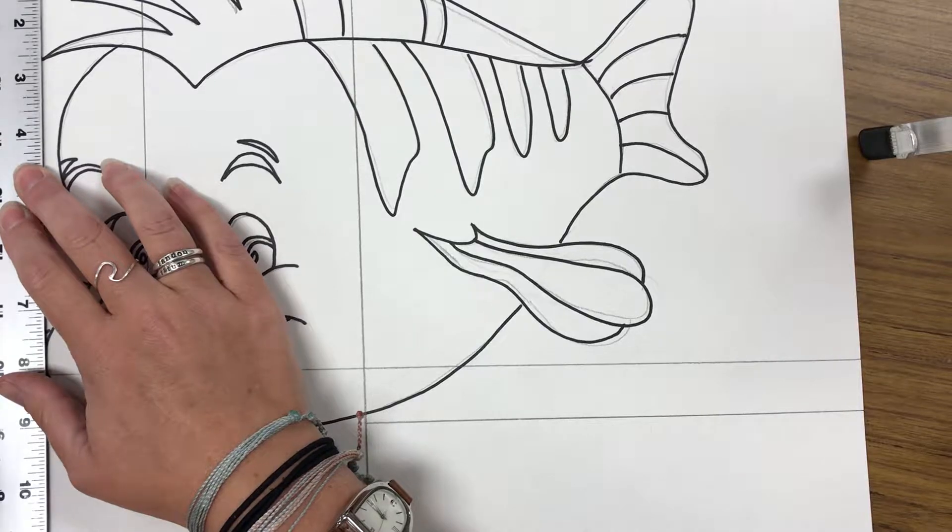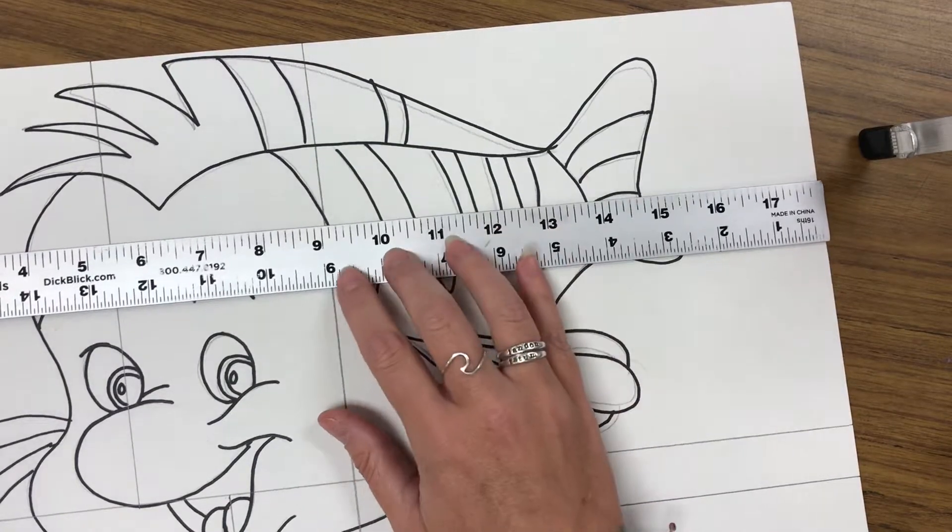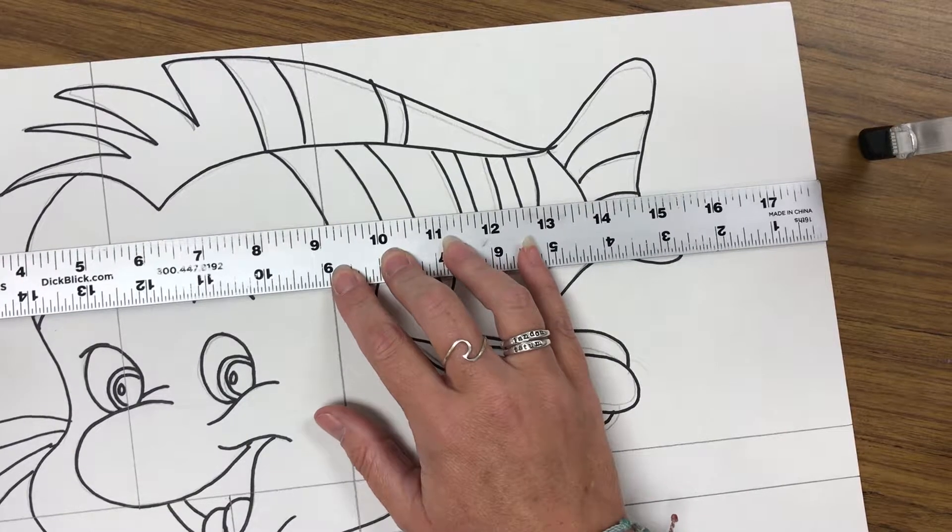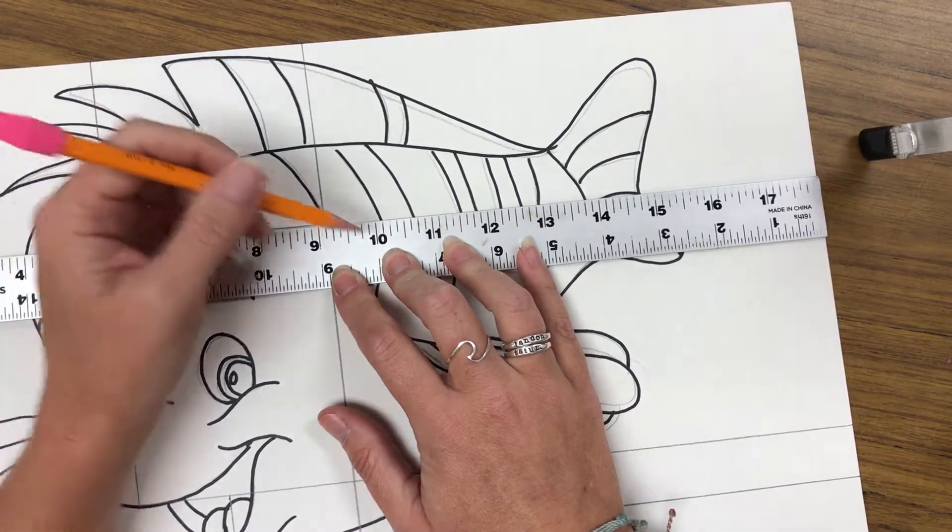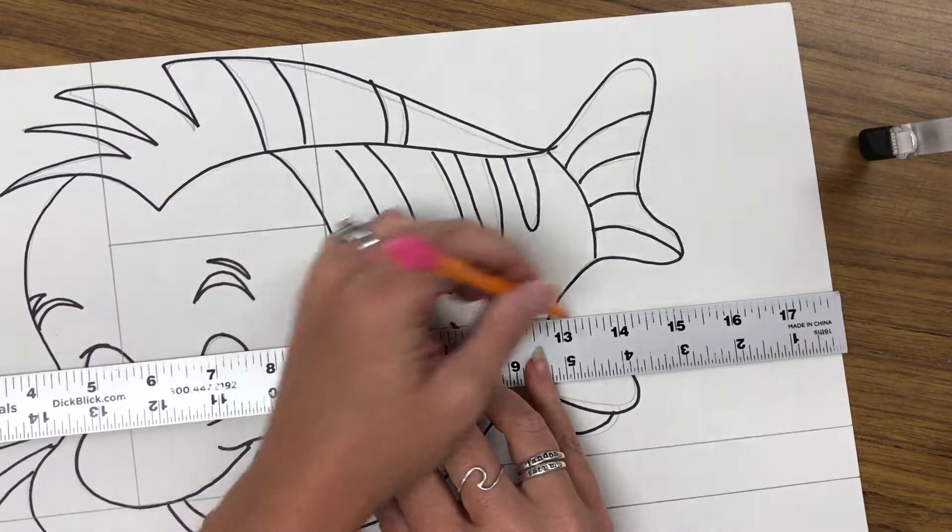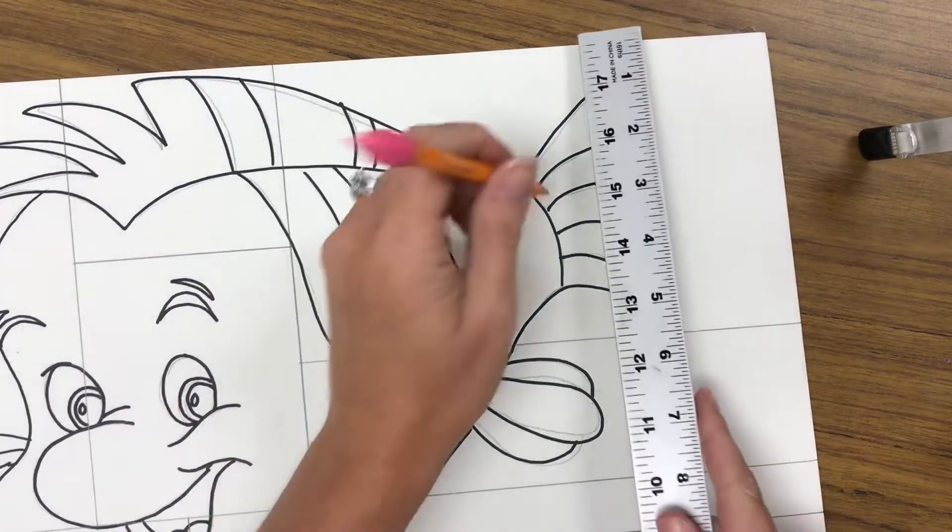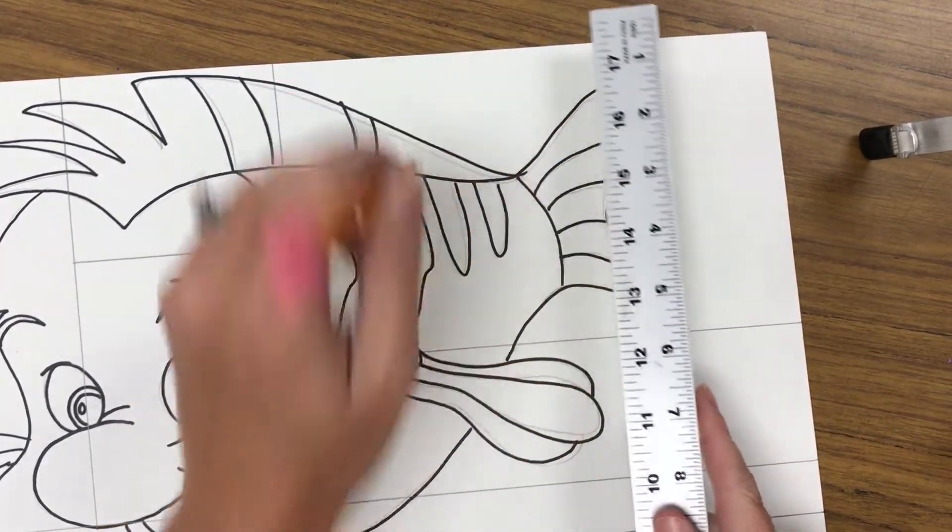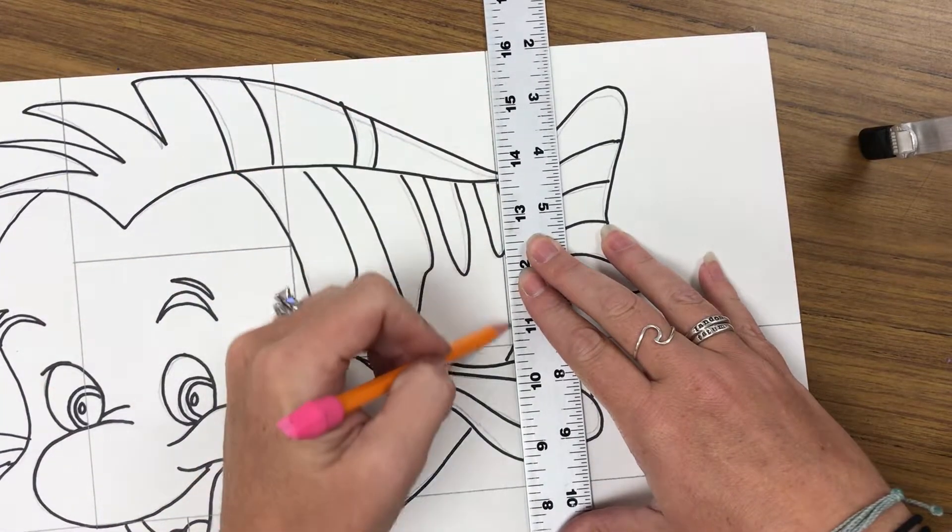You're going to continue doing this until your paper has all of these different sized squares. Now, one common issue that I see with some students is that they're actually trying to draw squares. You're not lining your ruler up and drawing a square. You are creating the squares by intersecting your lines.